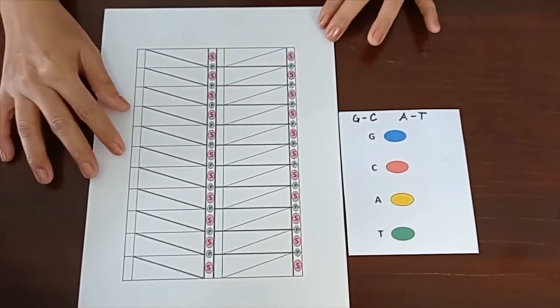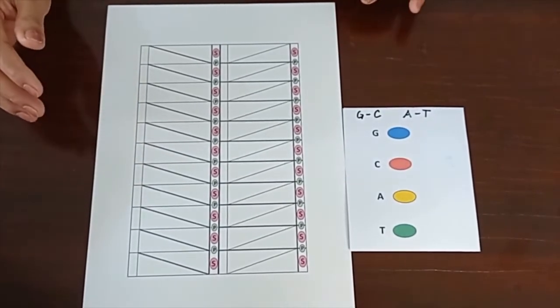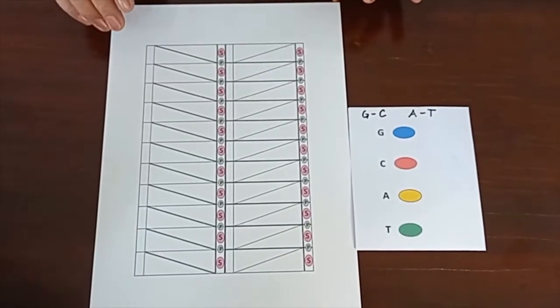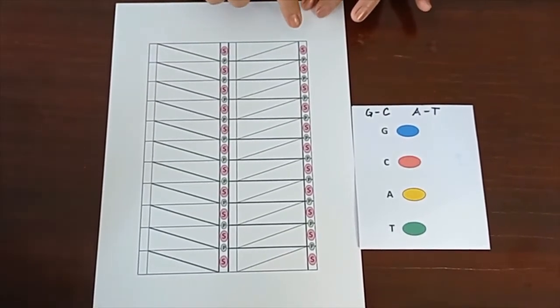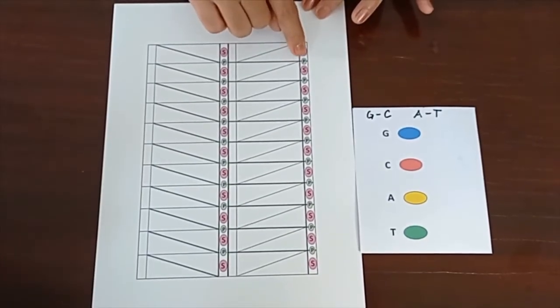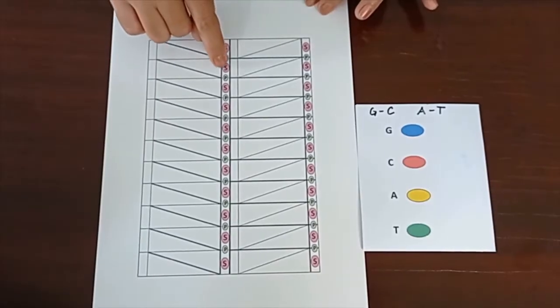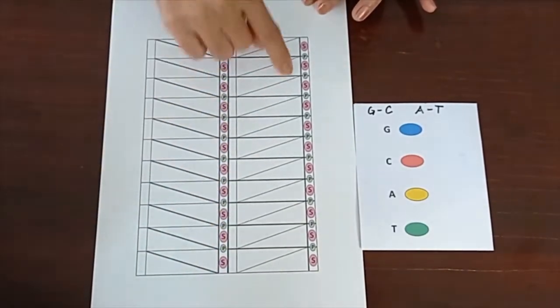I have prepared a template here. I got this from the internet, but I enhanced it by adding the backbone with an alternating sugar and phosphate. S for sugar, P for phosphate. So, sugar phosphate, sugar phosphate. The same here, sugar phosphate, sugar phosphate, and that goes down there.